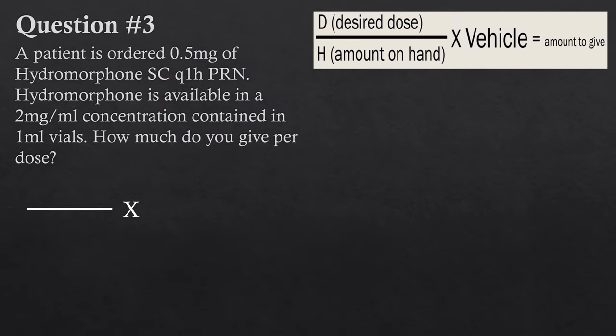Question three — pause it and try it for yourself. A patient has ordered 0.5 milligrams of hydromorphone subcutaneously, Q1H PRN. Hydromorphone is available in a 2 milligrams per mL concentration, contained in one milliliter vials. How much do you give per dose? This question is a little different, but if you do it the exact same way as the others, it becomes just like any other question. Let's start with the desired dose: 0.5 milligrams — that goes at the top.